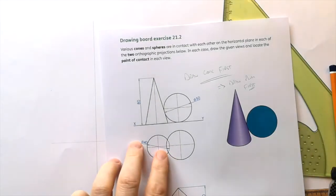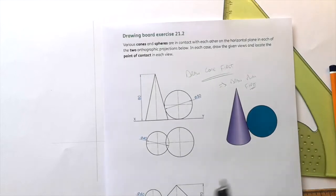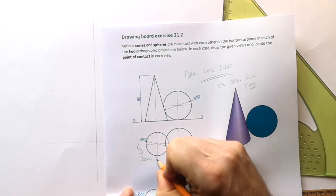Now be very careful because I'm going to set my compass to a 20mm radius. Therefore 20mm radius.